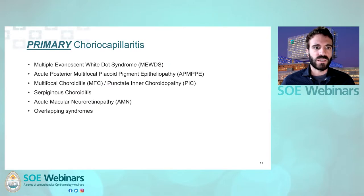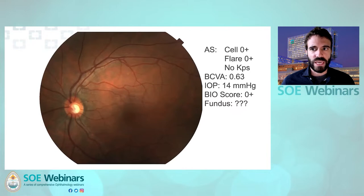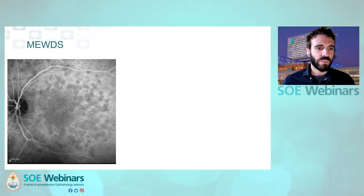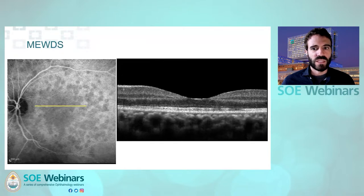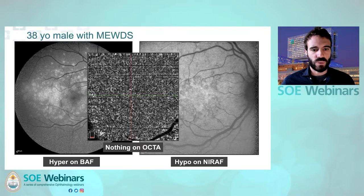According to the original classification, these are the entities composing primary chorocapillaritis. Let's start with MEWDS. This is a patient who has no cells in the front or back, but a decrease in vision due to foveal granularity — this corresponds to MEWDS, multiple evanescent white dot syndrome. MEWDS has been considered a chorocapillaritis because on ICG it appears as hypofluorescent lesions. All these white dots are hypofluorescent. On OCT they correspond to some RPE alteration with attenuation above the photoreceptors. This RPE alteration can be detected on autofluorescence as hyper because there's increased transmission since the photoreceptors are also misaligned.